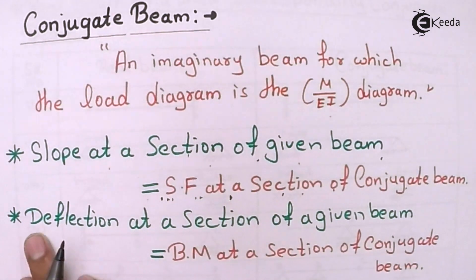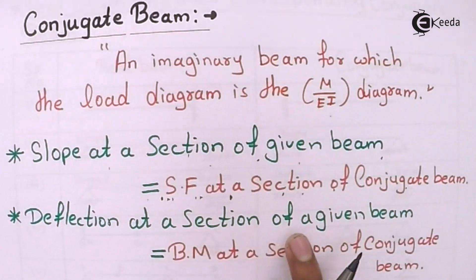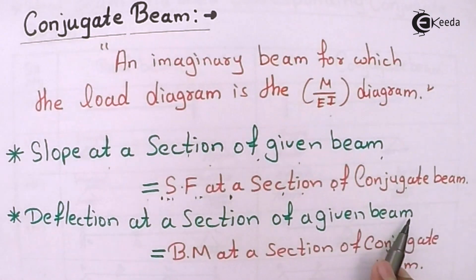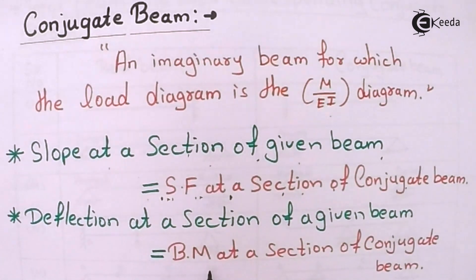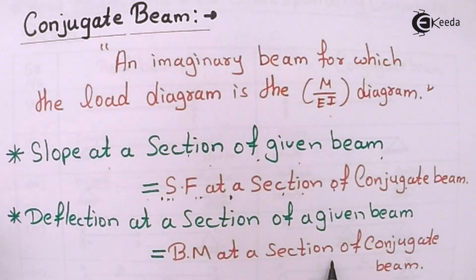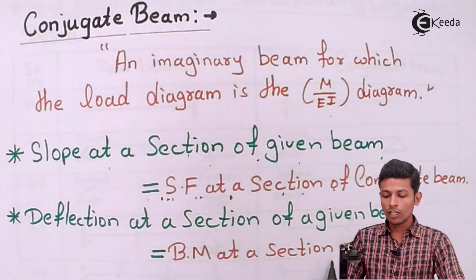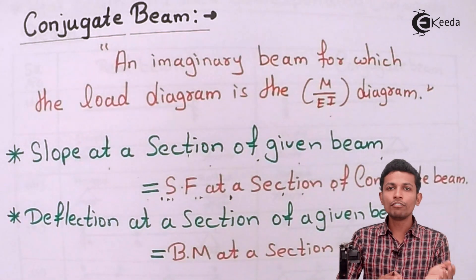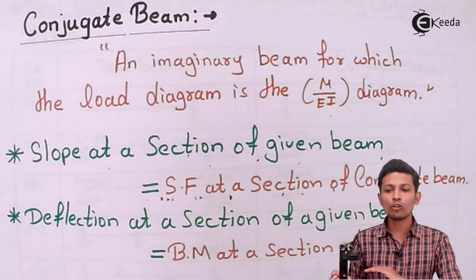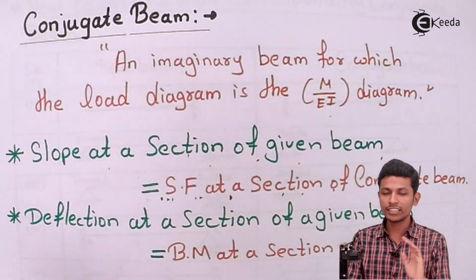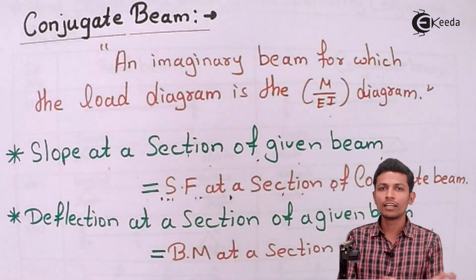The deflection at a section of a given beam is equal to the bending moment at the corresponding section of the conjugate beam. Now let's see some differences between real beams and conjugate beams, and the different types that come in exams.